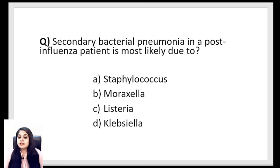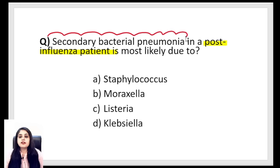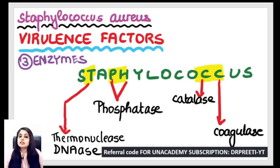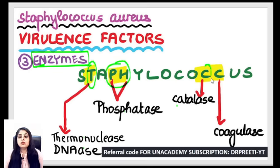If you get a question about secondary bacterial pneumonia in a post-influenza patient — post-viral infection can lead to secondary bacterial infection — we just studied that Staphylococcus happens to be the commonest cause of pneumonia and pneumatocele. So Staphylococcus aureus is the answer for secondary bacterial pneumonia post-influenza.